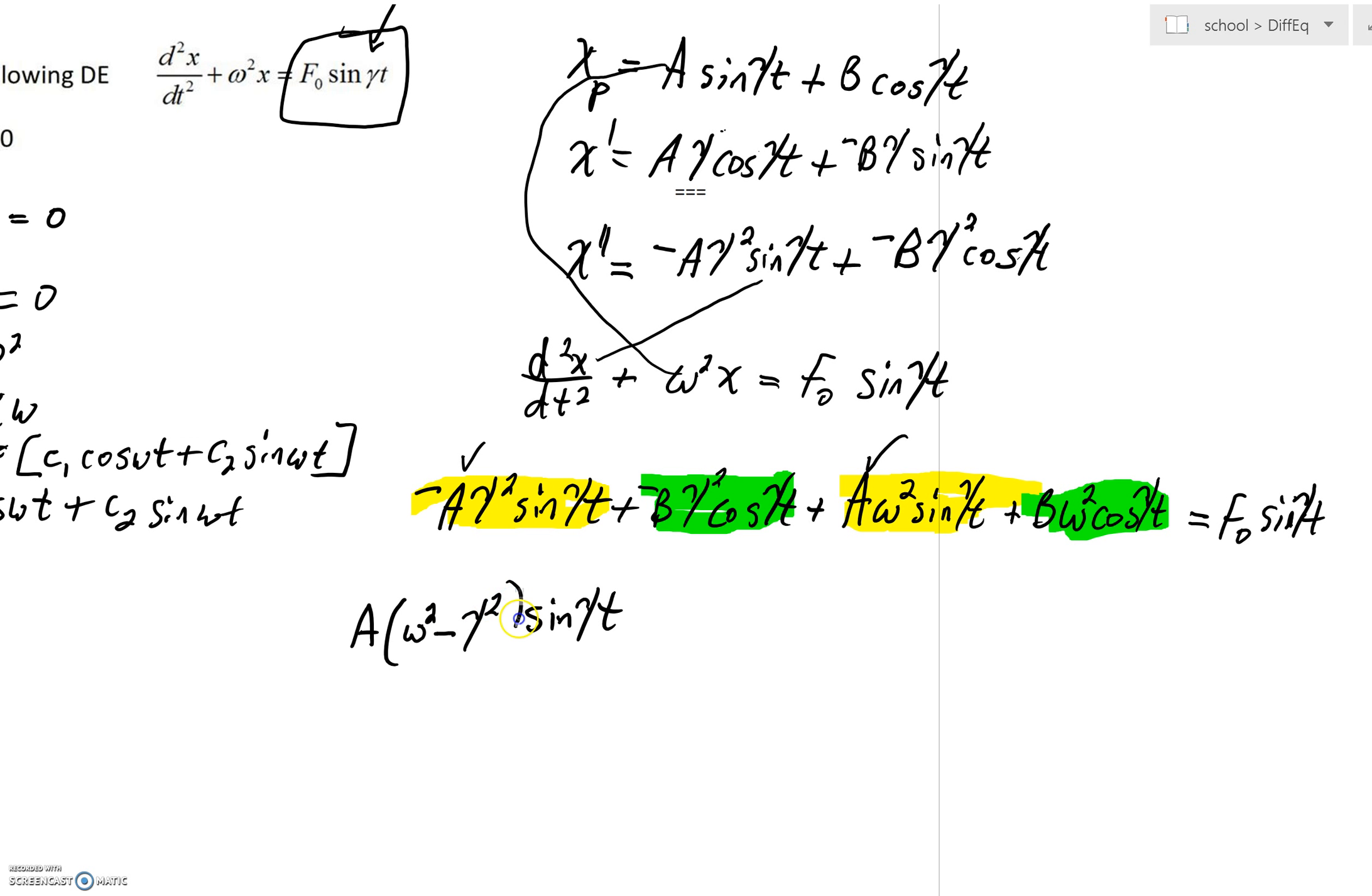So, in yellow, what I've just done is I've factored out an A out in front. I've factored out a sin(γt) off to the right. And then we've got ω² - γ².